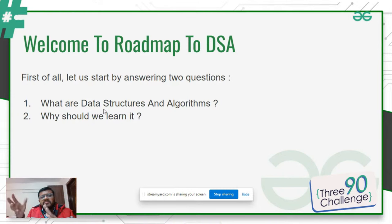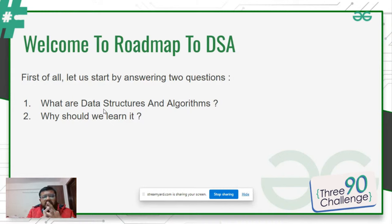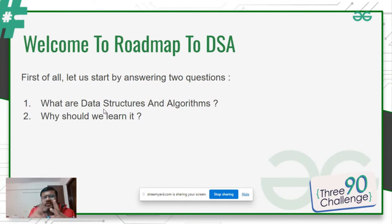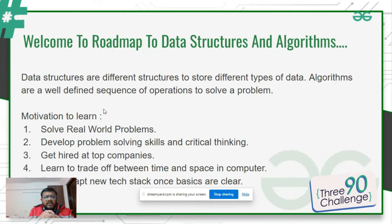Why should we learn DSA? When you are solving a problem using a computer, two points are very important: time and memory. For example, if you are purchasing something on Amazon and you click 'proceed to payment' and it takes 10 minutes, Amazon will lose a lot of customers. Memory is also important because there is limited memory. So you use the optimal data structure and algorithm to solve a problem in minimum time and using minimum memory.